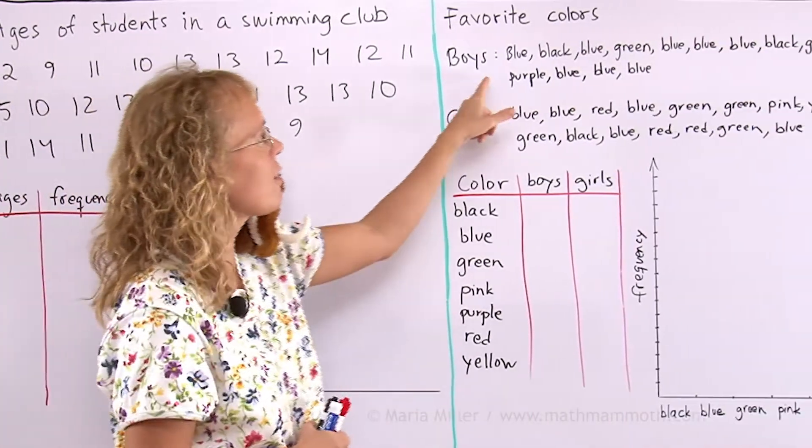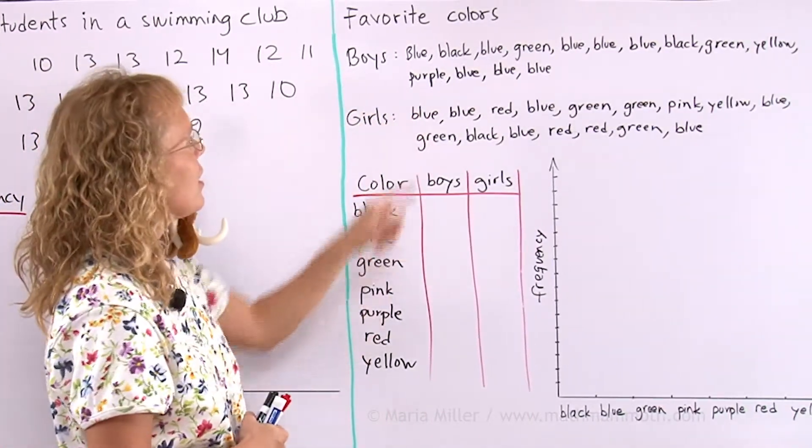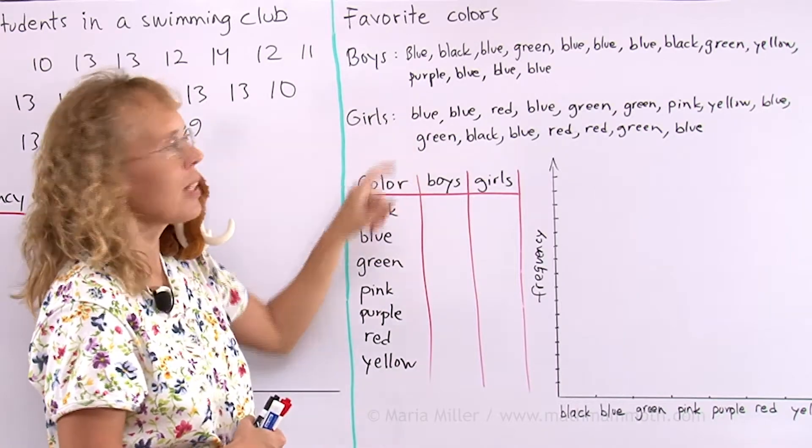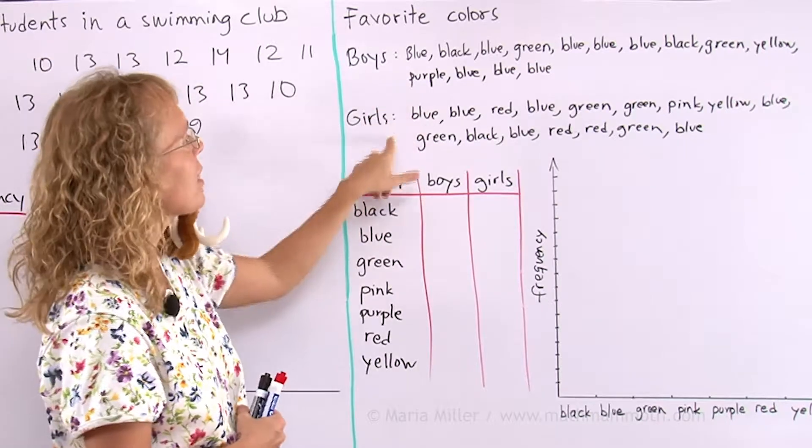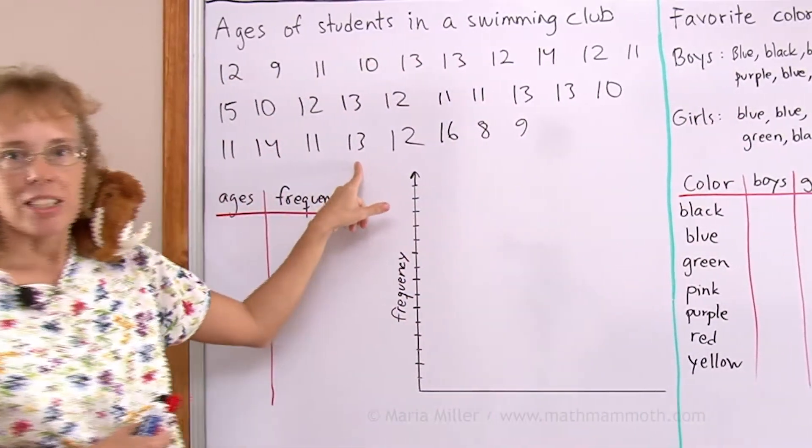Over here is a list of data or two lists of data. And this time they are not numbers, they are names of colors. And we are going to make a double bar graph out of this data. Out of this data we are going to make a histogram.